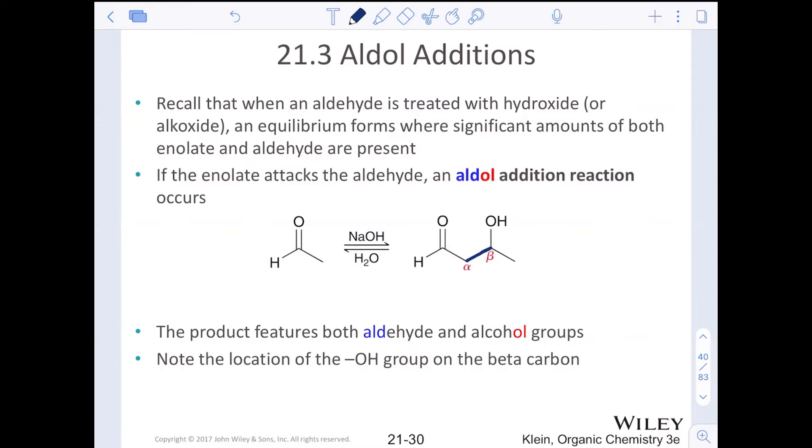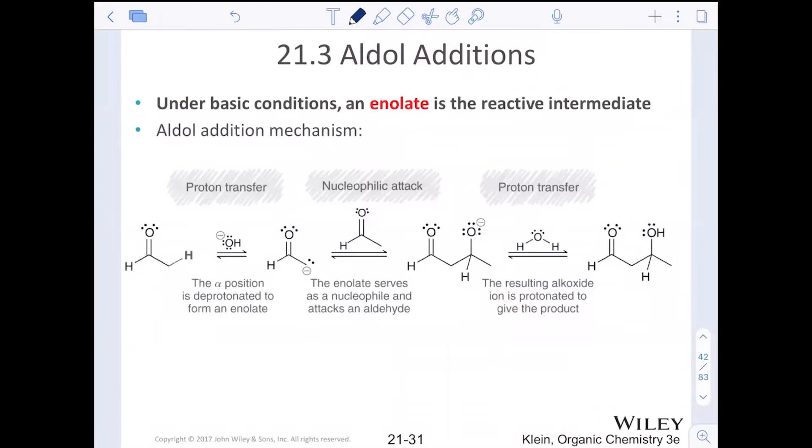The product features both the aldehyde and the alcohol group, which is why it's called aldol. The location of the alcohol group will always be on that beta carbon. Under basic conditions, an enolate is the reactive intermediate. This is always going to be done under basic conditions.